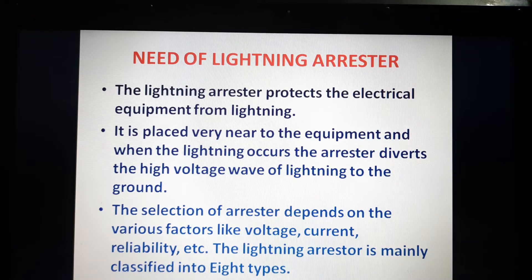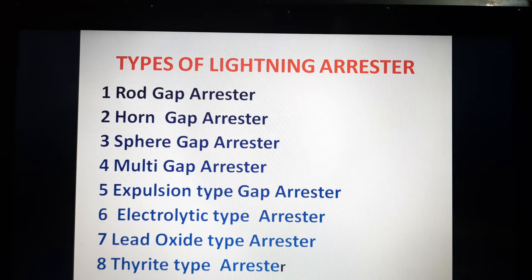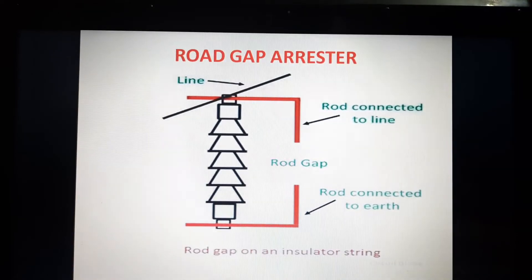The lightning arrestor is mainly classified into eight types. In this session, I will cover the first two: the rod gap arrestor and horn gap arrestor. Third is the sphere gap arrestor, then multi-gap arrestor, expulsion type gap arrestor, electrolytic type arrestor, lead oxide type arrestor, and last is the thyrite type arrestor.